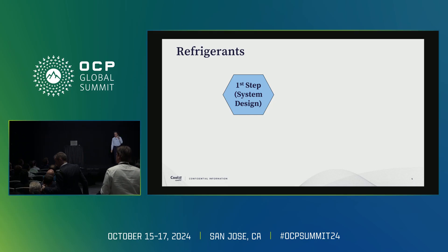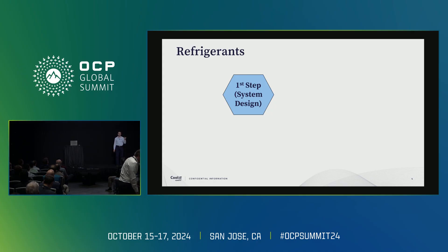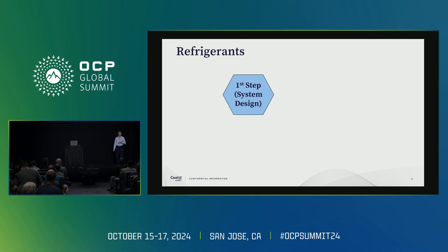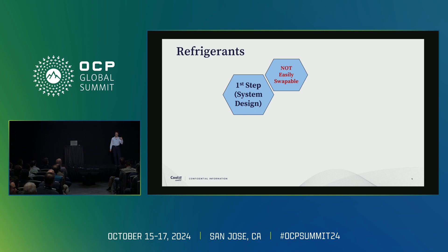The first and most important thing about two-phase system design is to first select your refrigerant — that is where everyone needs to start. You have to decide: I'm going to use R515B or R1234YF. That is the first block you need to set, then build your whole system based on that. After you've done that, it is not easily swappable. If you select your refrigerant, you cannot come back mid-project and say, let's change the refrigerant. There are several factors involved; it is not easy to do.